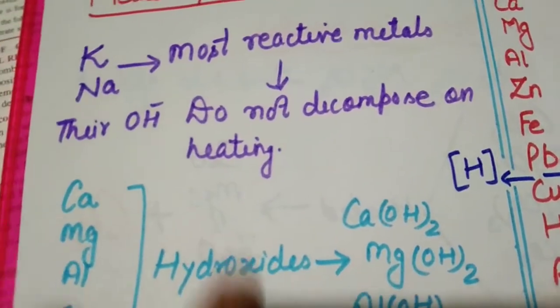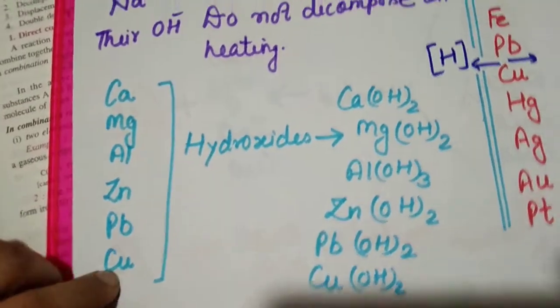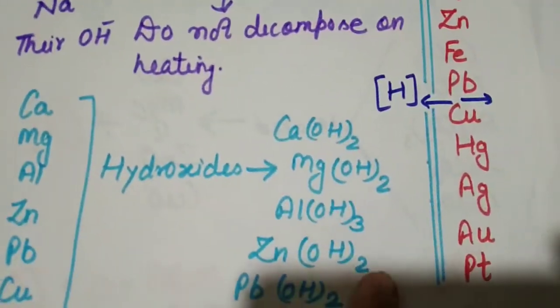After that we have calcium, magnesium, aluminium, zinc, lead, copper. How are their hydroxides written? What is their formula?